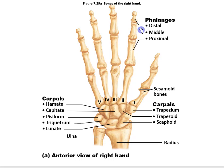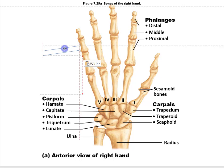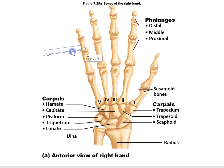For each phalanx, the base is the proximal part, the shaft is the middle portion, and the head is the distal part. This is true of any phalanx.